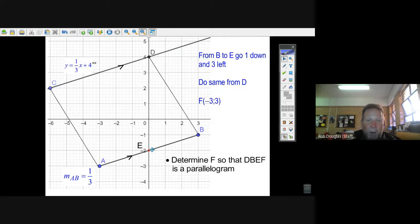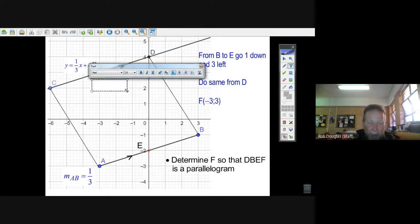All you do for the two coordinates is go up to D and do the same thing. Well, go one down and three to the left. Well, do the same thing. Just go one down and three to the left, and you've got yourself one down and three to the left. You've got the point F. There it is. That's the point F.